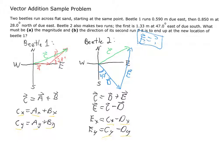Let's start with vector a. Looking at it, the entire vector is only in the x direction, so all 0.59 meters is only in the x direction. Therefore ax = +0.59 meters, and ay = 0 meters because the entire vector is in the x direction.